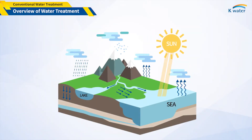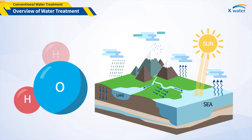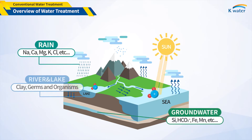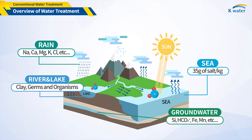Water quality refers to the physical, chemical, and biological characteristics of water that contains impurities. Pure water consists of hydrogen and oxygen, but the natural water used for water supply also contains a lot of impurities with complex composition. Rainwater contains sodium, calcium, magnesium, potassium, etc. Groundwater includes silicic acid, bicarbonate, iron, and manganese. Rivers and lakes have clay, germs, and organisms. Even clear seawater has about 35 grams of salt per kilogram.